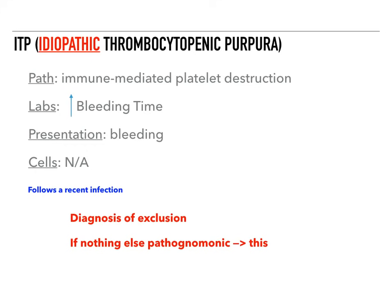I started with this one because it's the most simple and the most idiopathic. The other bleeding disorders all have pathognomonic findings. But ITP is kind of like, well, I don't know — they're bleeding, it's ITP. You'll see how simple this is compared to the other ones as we continue to move through.